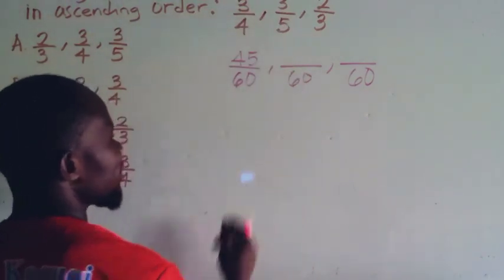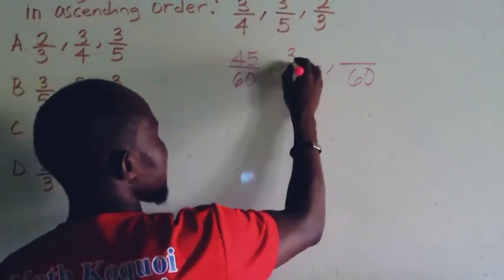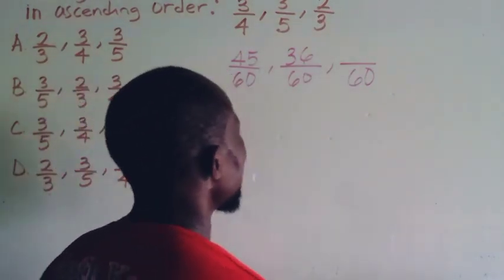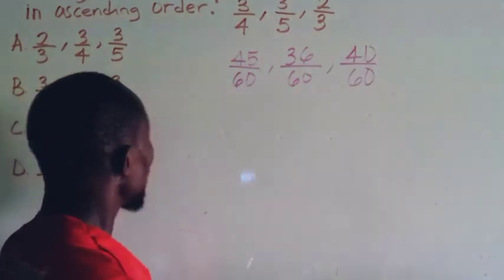5 going into 60 goes 12 times, giving us 36 over 60 for 3/5. Then 3 into 60 goes 20 times, and 20 times 2 gives us 40 over 60 for 2/3.